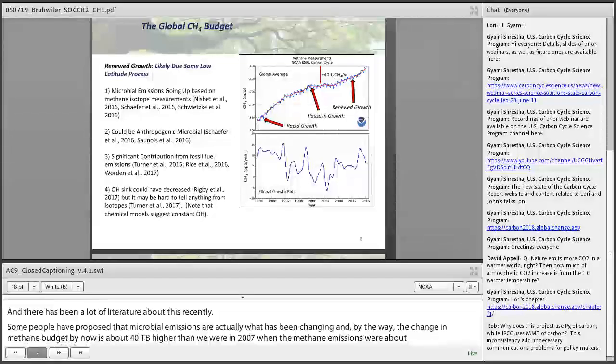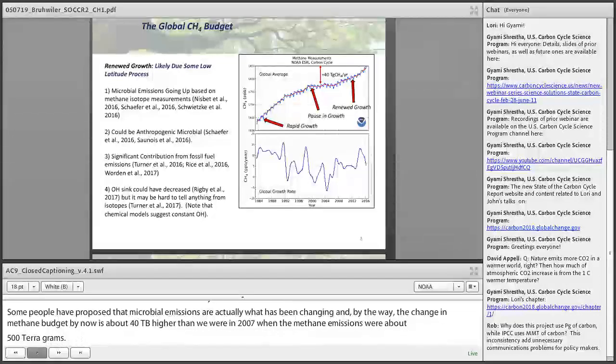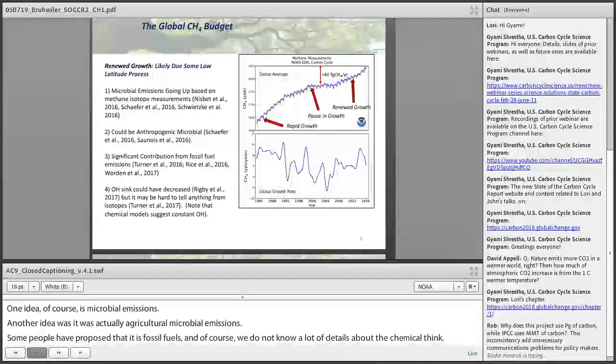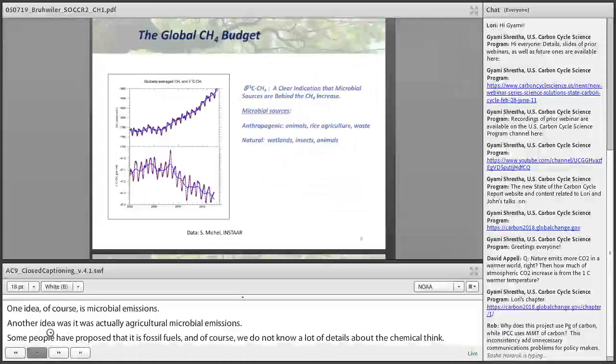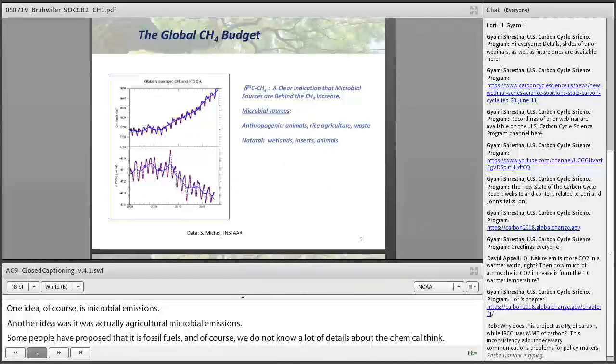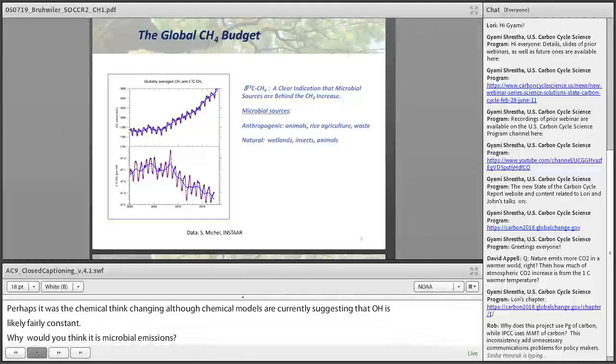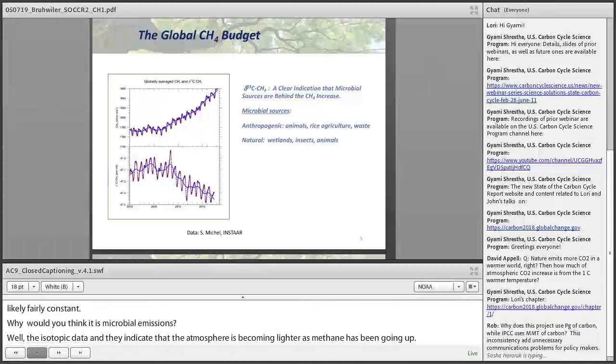I'm going to take a deviation into methane because it's very interesting and we don't know much about it. We divide this curve into three parts: rapid growth, pause in growth, and renewed growth. The rapid growth and pause were proposed by Dlugokencky to be simply the global emissions and chemical sink coming into equilibrium. There were many mechanisms proposed. More interesting is the period of renewed growth after about 2007. Some people have proposed that microbial emissions are what has been changing. The change in the methane budget by now is about 40 teragrams higher than 2007, when emissions were about 550 teragrams per year - a significant perturbation.